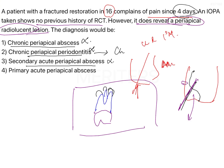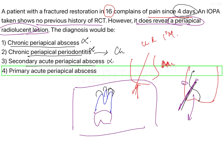This brings us to the answer: primary acute periapical abscess. It is acute because the history is only four days. It reveals a periapical radiolucent lesion, confirming it is a periapical abscess. Since it is a nascent, new lesion that has developed over only four days with no prior RCT or pathology, it is primary in nature.